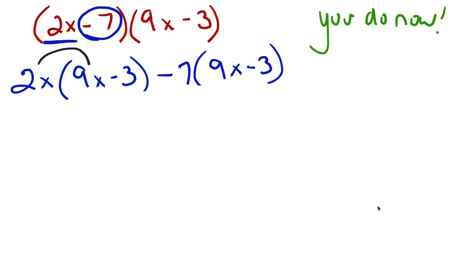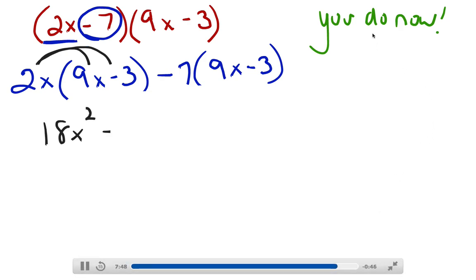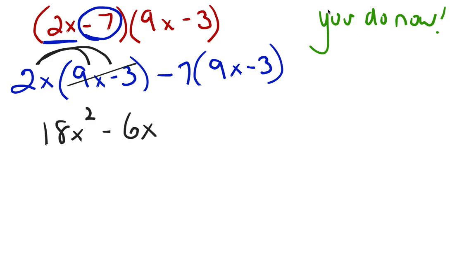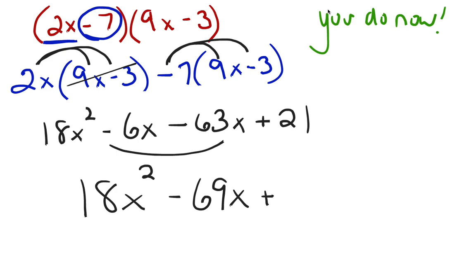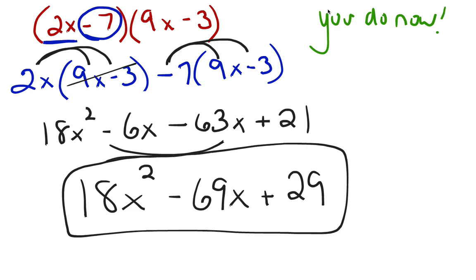Do your distribution. 2x times 9x is 18x squared, and 2x times negative 3 is minus 6x. Then minus 7 times 9x is minus 63x, and minus 7 times negative 3 is plus 21. Combining the two middle terms gives a final answer of 18x squared minus 69x plus 21. It's in standard form and simplified, so we are done.